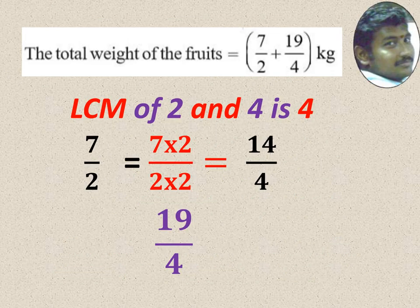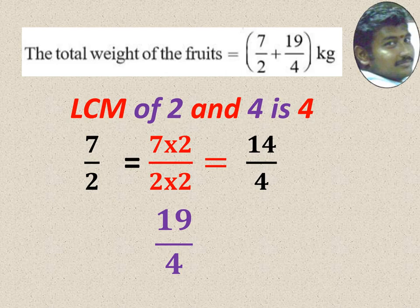Here, you see, 4 is multiples of 2. So LCM of 2 and 4 is 4. Just multiply 2 numerator and denominator in 7 by 2. We get 14 by 4. Now we see 14 by 4 and 19 by 4. Both are like terms. Now easily we can add.